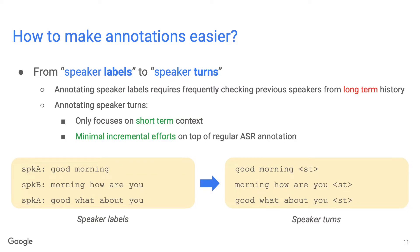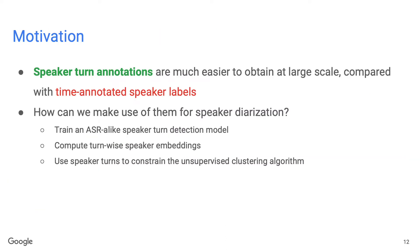Another approach to make annotation easier is to use speaker turns instead of speaker labels. To annotate speaker labels, the annotator needs to frequently go back to previous parts of the audio and listen multiple times to identify whether a new speaker previously appeared. Humans are usually not very good at this, and annotators can make lots of mistakes. But to annotate speaker turns, the annotator never needs to go back — annotation can be done purely based on short-term context, adding minimal incremental effort on top of a regular ASR transcription annotation.